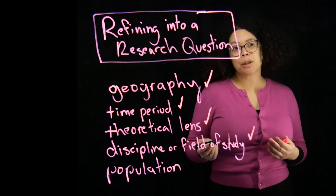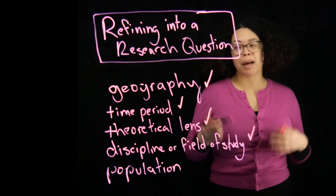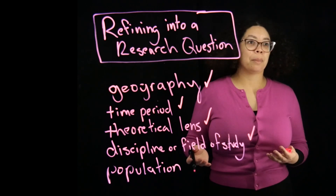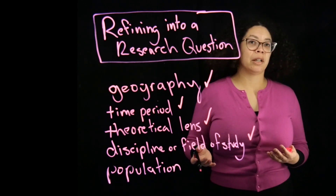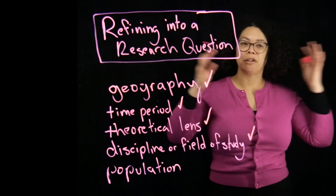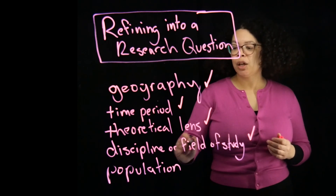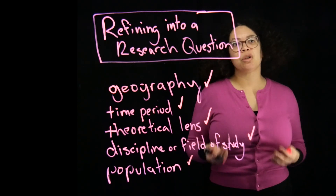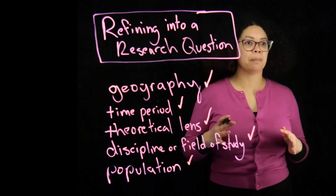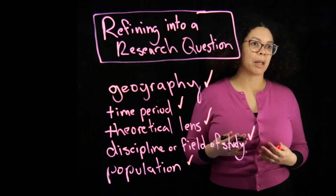Another approach is to look at a particular population of study. For example, around the loss of biodiversity, do I want to look at its impact on a particular animal or a particular group within that broad category of biodiversity? These are all different potential ways that I could narrow and focus my question to make it easier to research and find information.